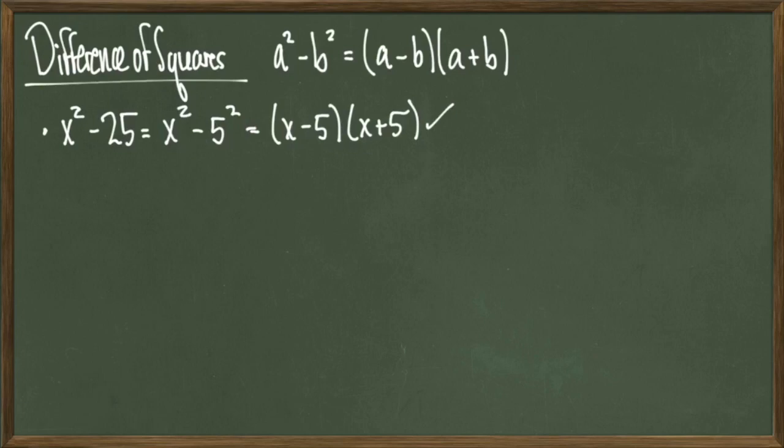Let's look at an example. Consider x squared minus 25. We notice that this is equal to x squared minus 5 squared. The difference of squares formula tells us that this factors into x minus 5 times x plus 5.